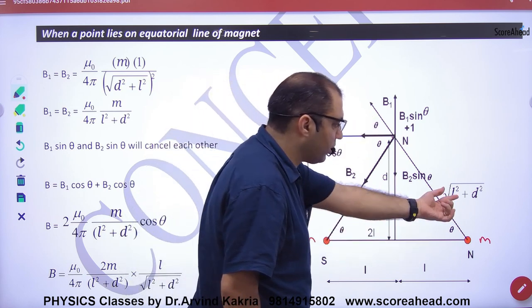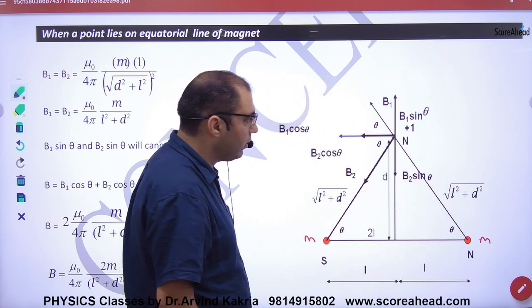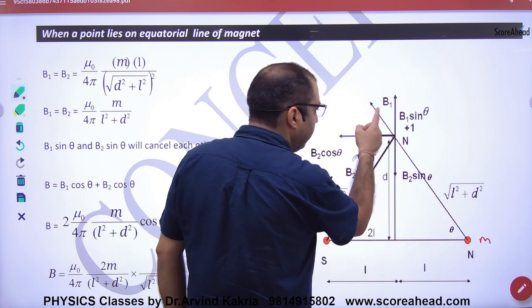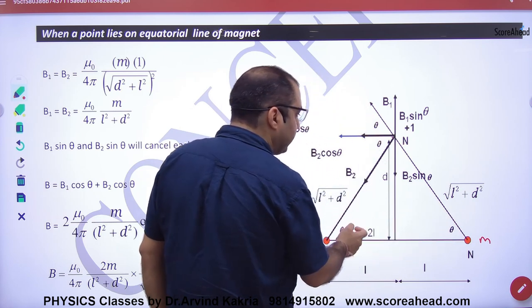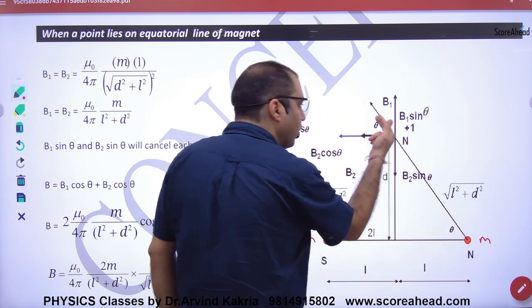If this is d and if this is L, then under root of L square plus d square. Here is B1. And if this is theta and this is theta, then this is theta with the alternate, then this is theta with the corresponding theta.